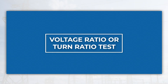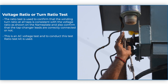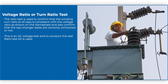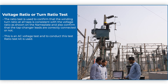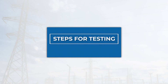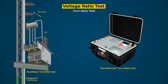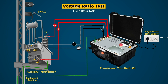Voltage ratio or turn ratio test: The ratio test is used to confirm that the winding turn ratio at all taps is consistent with the voltage ratio as shown on the nameplate, and also to confirm that the tap changer leads are correctly connected. This is an AC voltage test and a ratio test kit is used. For this test, open the earthing terminal of HV winding and LV winding; LV winding should be open circuited. Connect a single-phase 30 volt AC supply to the test kit, connect the HV lead of the test kit to HV winding, and connect the LV lead of the test kit to LV windings. Also connect the EARTH terminal of the test kit to transformer earthing.